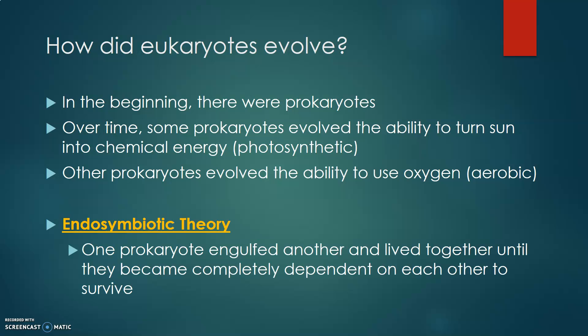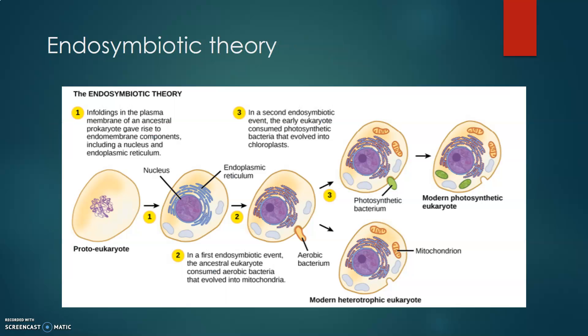There is a theory known as endosymbiotic theory, or endosymbiosis, which proposes that one prokaryote engulfed another prokaryote, and they started to live together until they became completely dependent on each other to survive. This is illustrated in the picture here on the slide, where you can see a proto-eukaryotic cell, or a pre-eukaryote, in the first image.